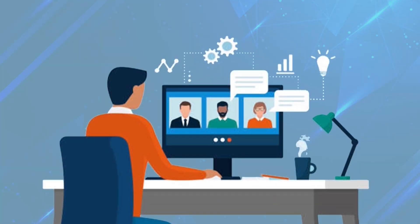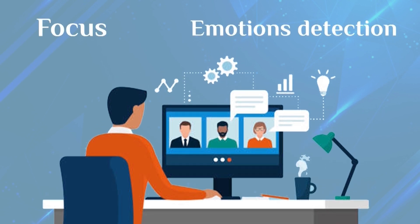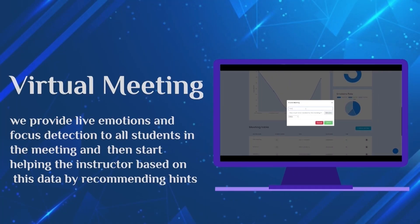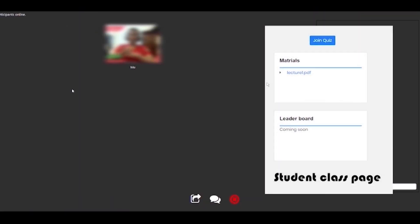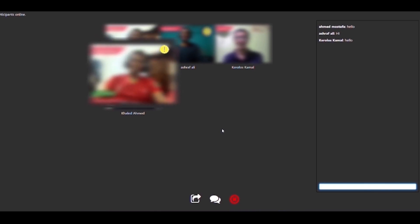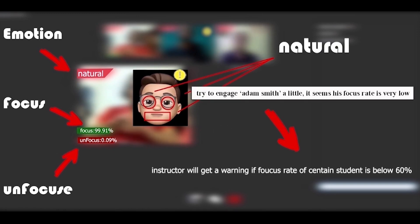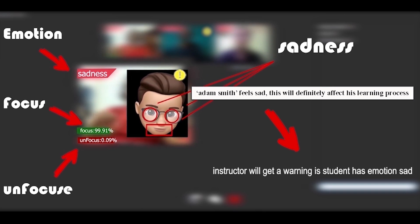In our solution, we provide real-time focus and emotion detection for all students in the virtual meeting. The instructor can create a meeting from the dashboard. When students join, the system will start detecting the focus and emotion of each student. Based on these data, we will start recommending hints or decisions to the instructor, or even warn them about a problem in the class. All these hints aim to increase engagement during the meeting.